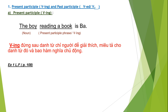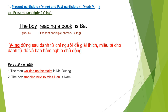Để rõ hơn, chúng ta sẽ làm thử ví dụ trong phần language focus ở sách giáo khoa trang 108. Cô sẽ miêu tả những nhân vật trong tranh. Câu thứ nhất miêu tả Mr. Quang: 'The man walking up the stairs is Mr. Quang' — người đàn ông đang bước lên cầu thang là ông Quang.